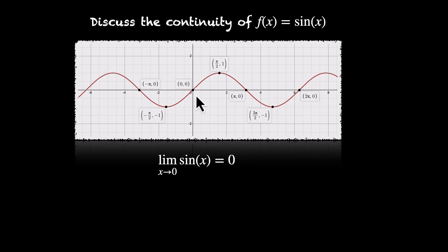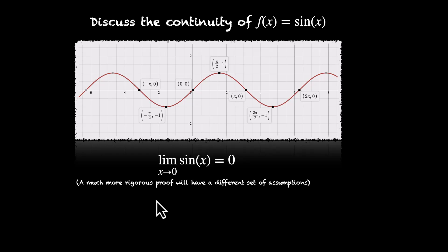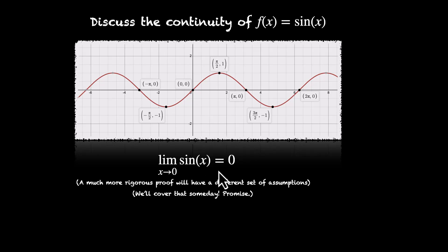This is something that we can observe from the graph. We can see that around x = 0, the output sin is approaching 0. There are more rigorous proofs available online, and we promise to cover some of them someday. But for now, let's go with this one.